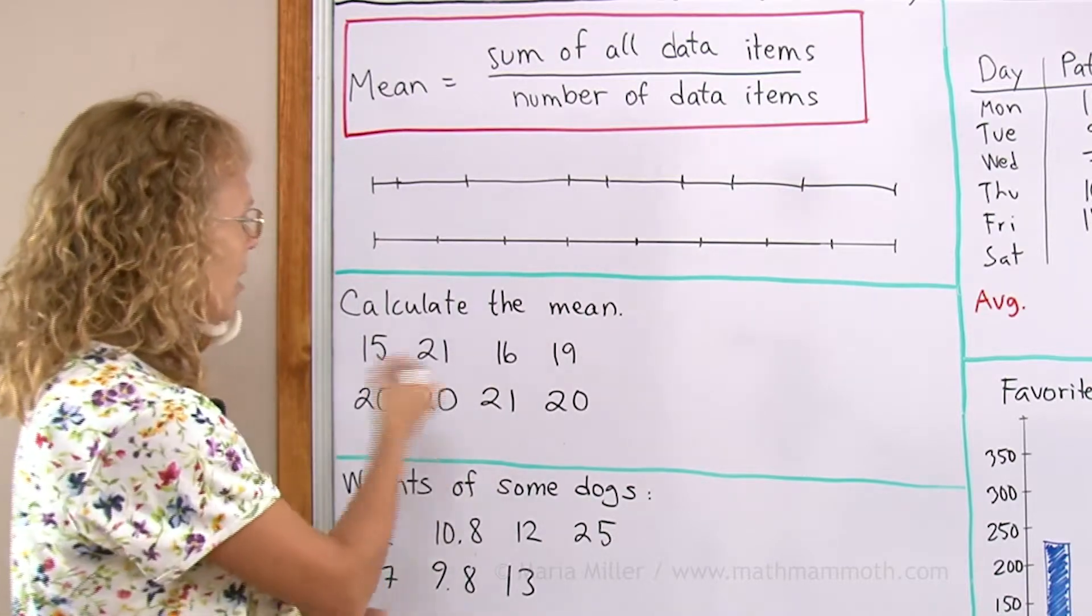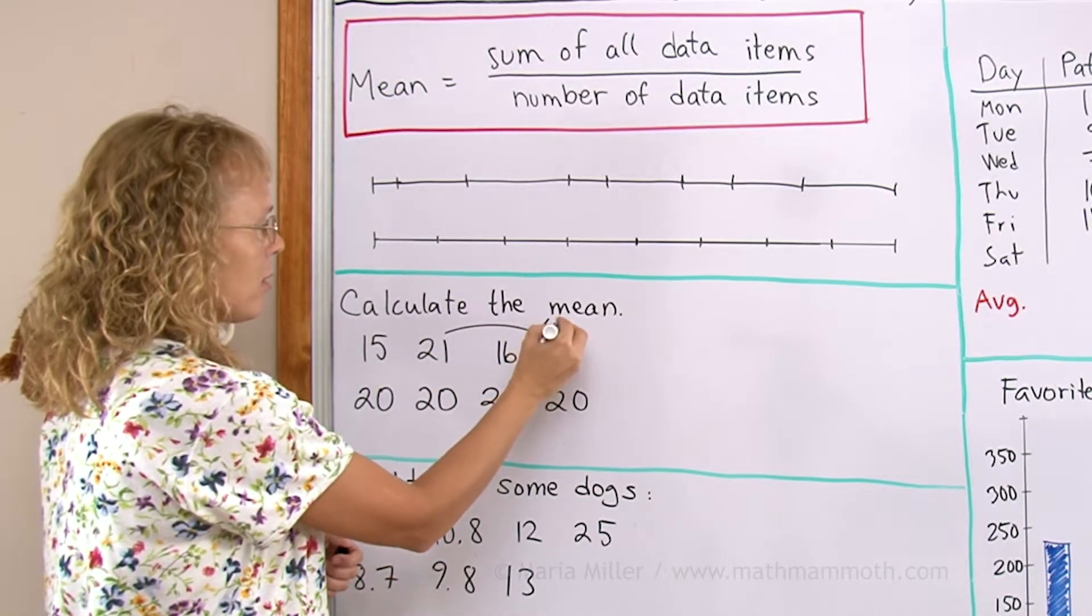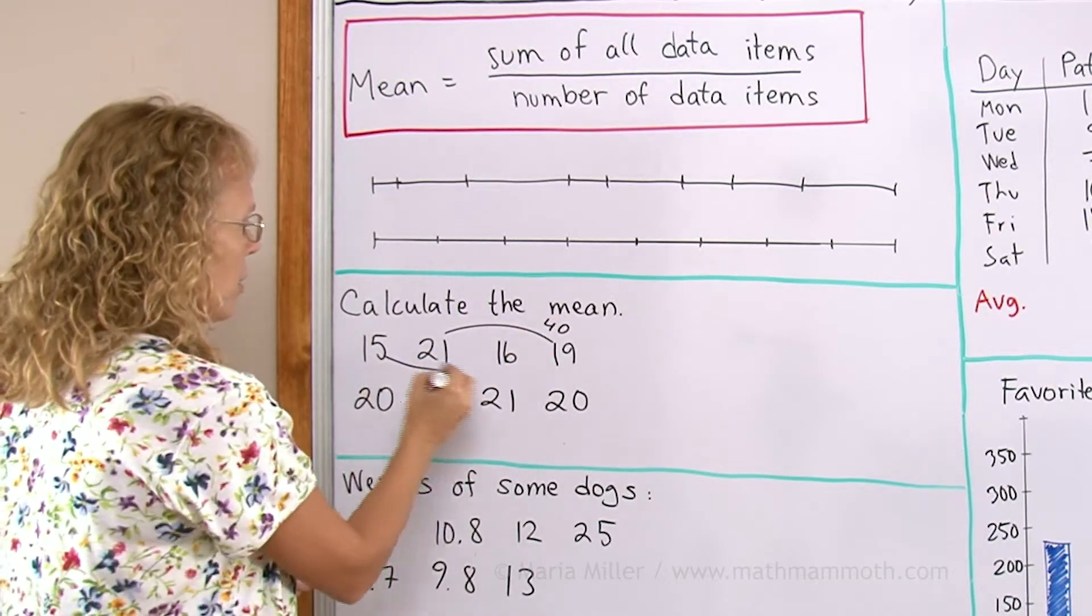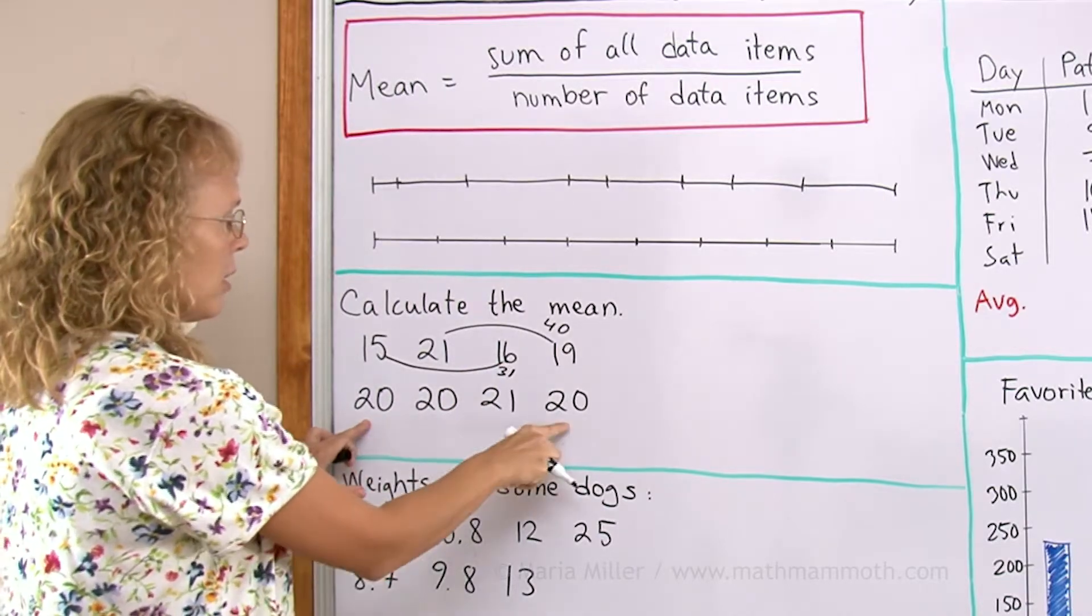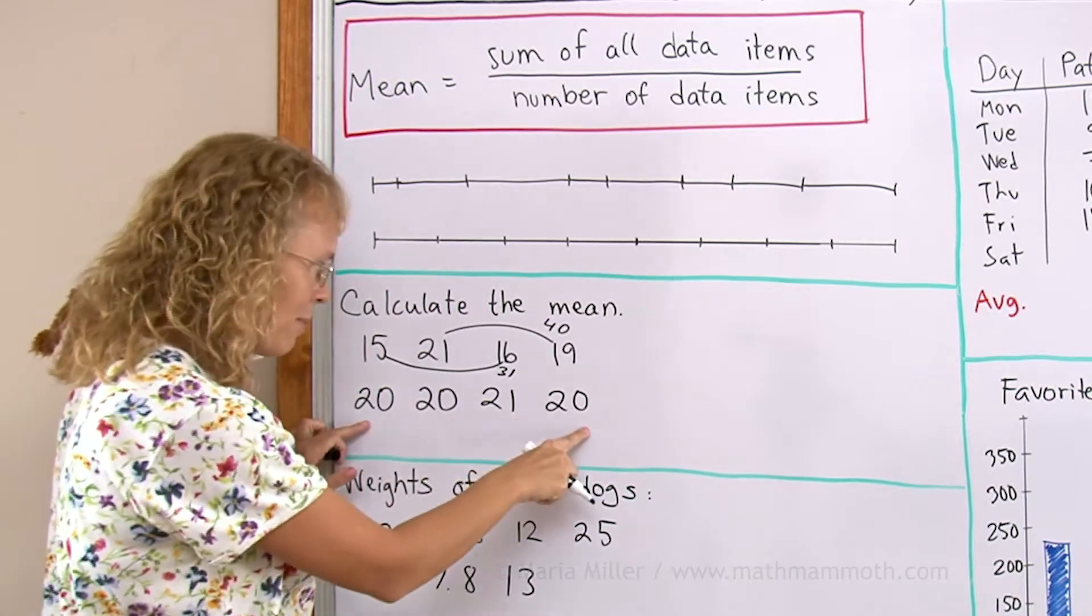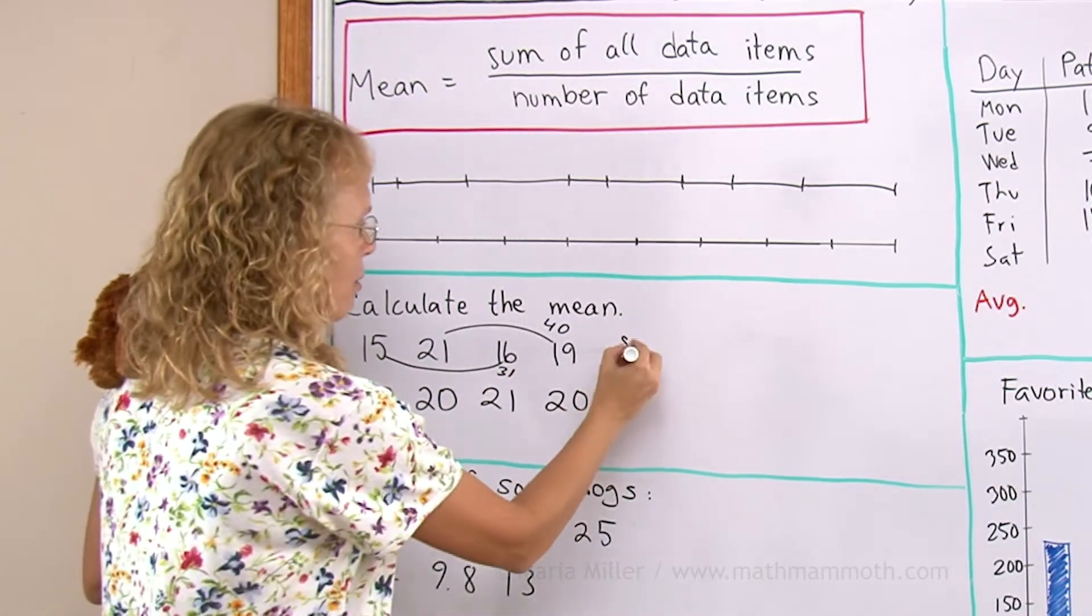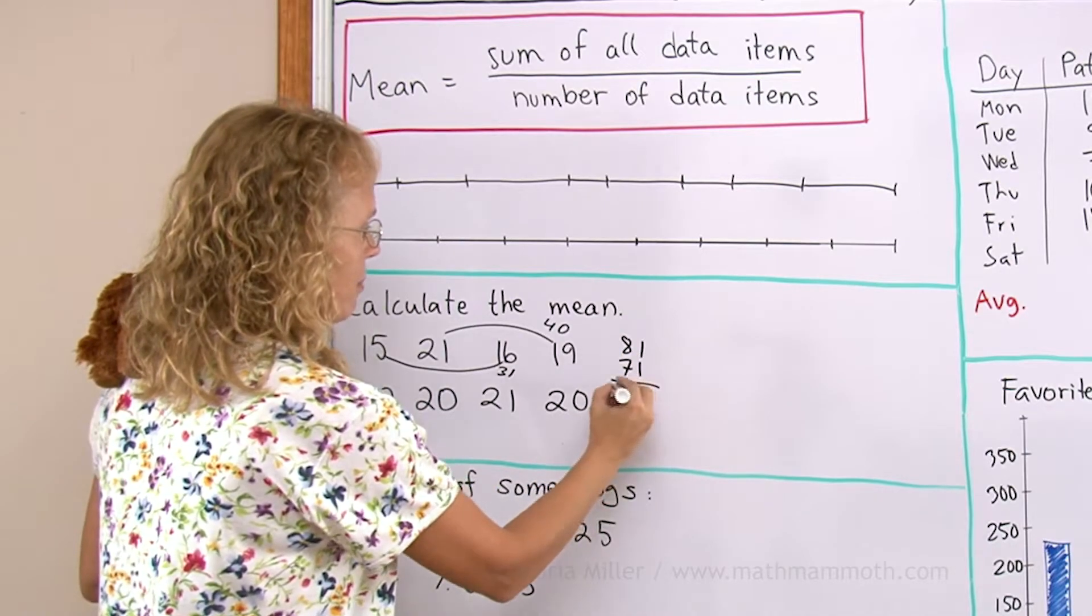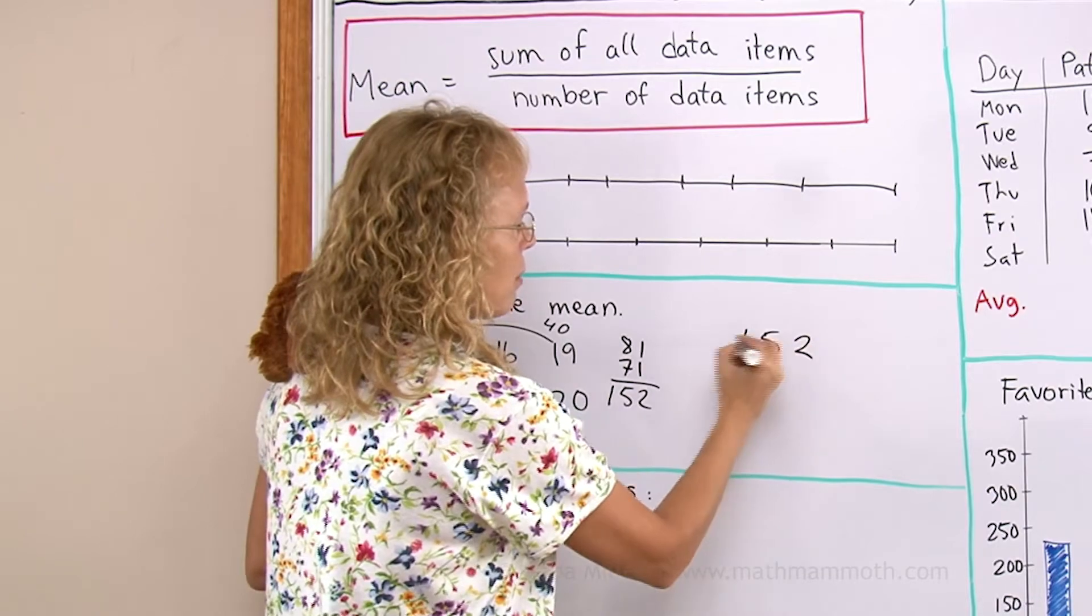So let's add these numbers and see what we get. Now 21 and 19 together are 40. And these two together are 31. So here I have 4 times 20 and 1. So that's 81. And then these two are 71. 81 and 71. 152. And now divide that by 8.